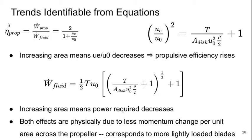If I just look at the expression for propulsive efficiency, I need to figure out what's going on with ue over u0 when I increase that area. I can look here and say, well, if I increase the disk area, everything else being constant, this first term gets smaller, so ue over u0 gets smaller, gets closer to 1. So increasing the area means ue over u0 decreases, so the propulsive efficiency goes up.